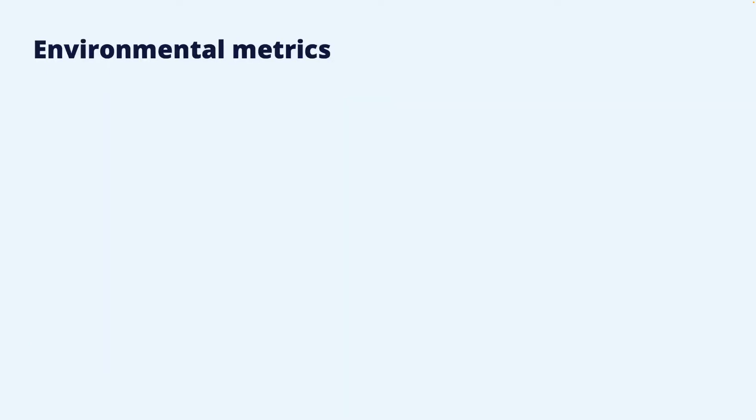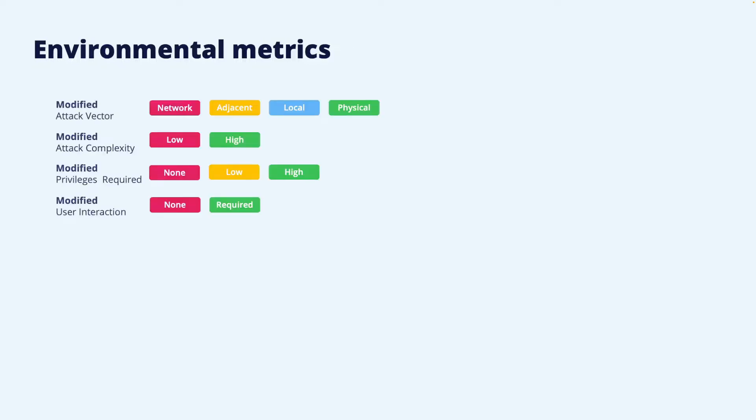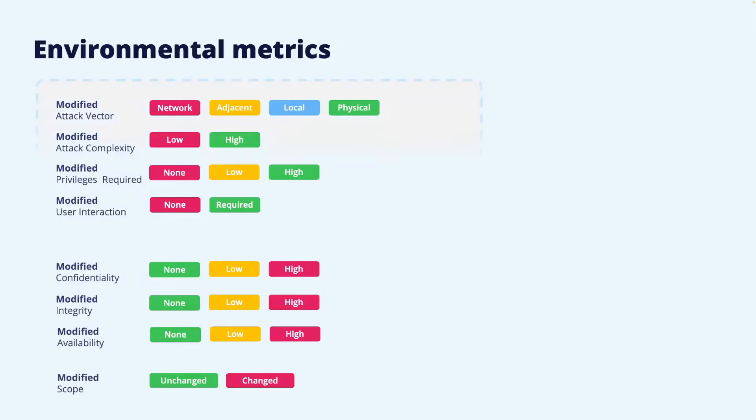The third CVSS score is the environmental CVSS score. This score can be used by an organization to put the vulnerability into the context of their specific operations, properties, and circumstances. This score does not really add any new distinct metrics, but instead allows the organization to customize the information in the base score. There are two types of customization that can be done.